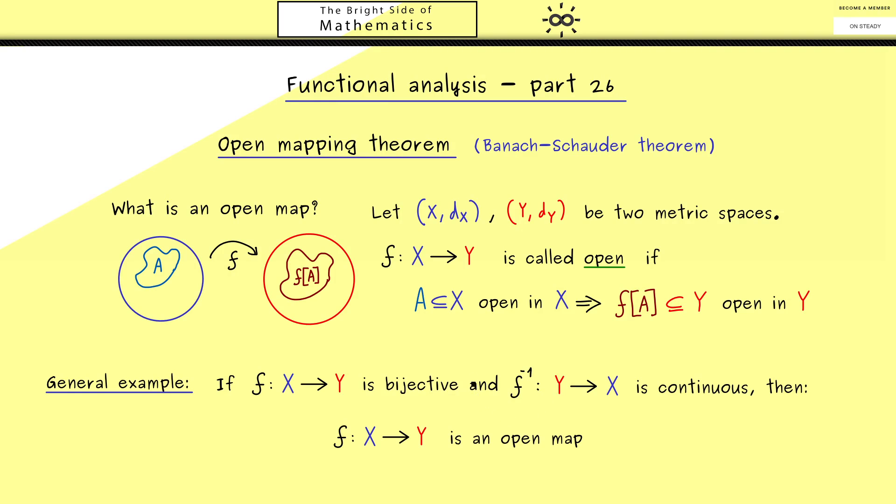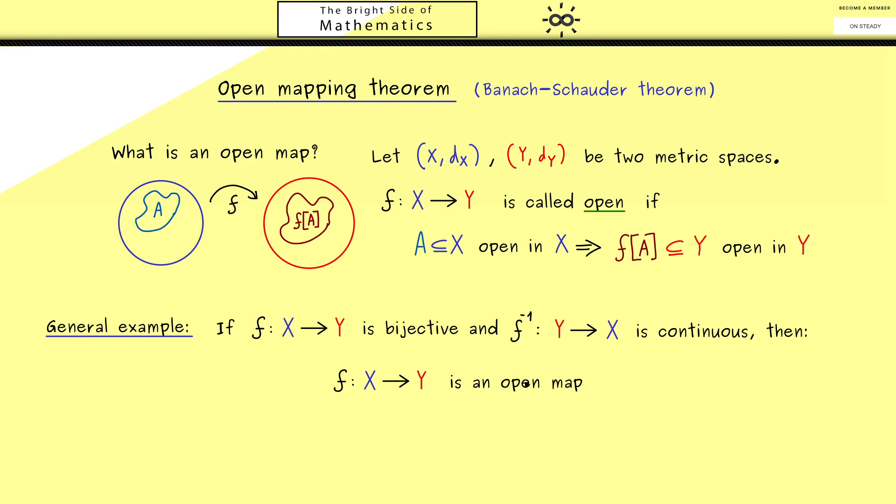This is easy to see when you look at the definition of the continuity of the inverse map. It simply means when you have an open set on the right-hand side, the pre-image on the left-hand side is also an open set.